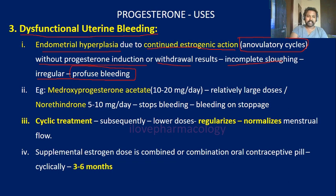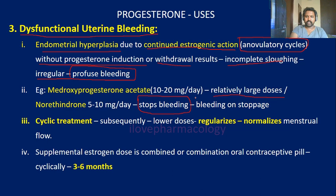In such cases of anovulatory cycles, you can add medroxyprogesterone acetate at relatively higher doses, or use norethindrone or equivalent progesterone drugs to stop the bleeding. Stoppage of bleeding will persist as long as you continue progesterone. Once you stop, endometrial bleeding can reoccur. Subsequently, cyclic treatment along with estrogen using lower dose preparations can regularize and normalize menstrual flow.